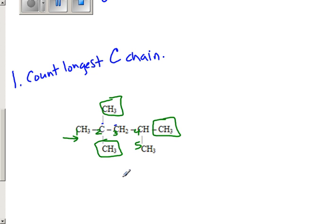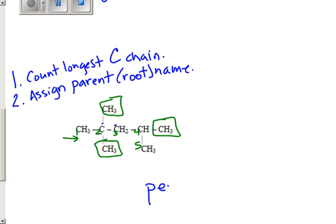Now the first thing I did was determine the longest continuous chain of carbons. Then the second thing to do would be to assign a parent or root name that will tell me how many carbons are in the longest continuous chain. And since we said there were 5 in the longest continuous chain, the parent or root name is pent. The suffix, meaning the ending of the name, is ane. And I'll draw an arrow that tells me how I know it is ane because these are carbon-carbon single bonds.